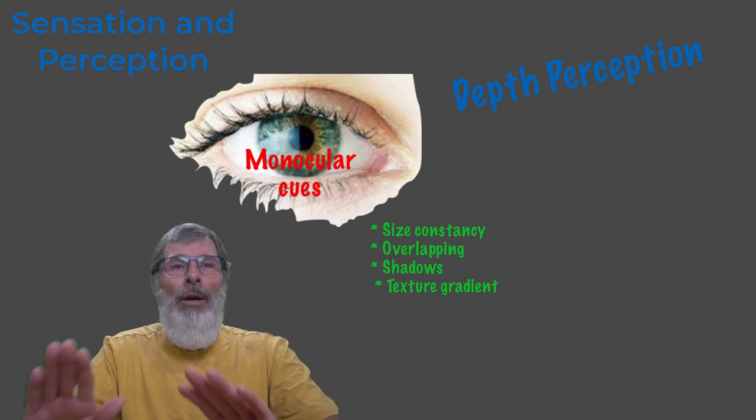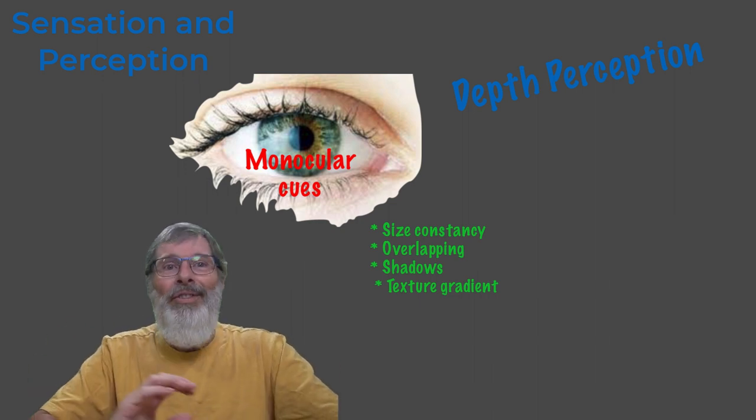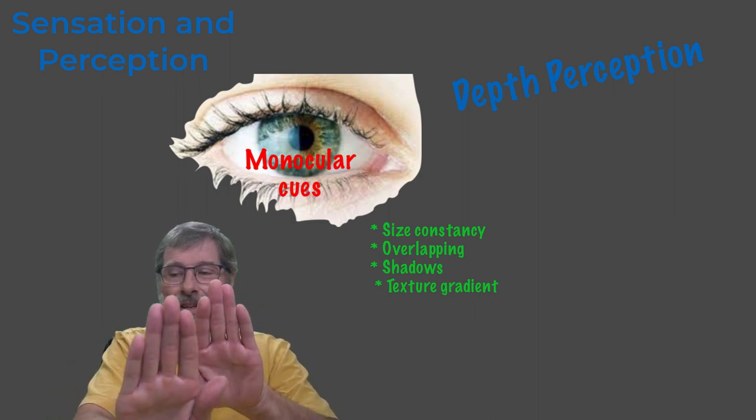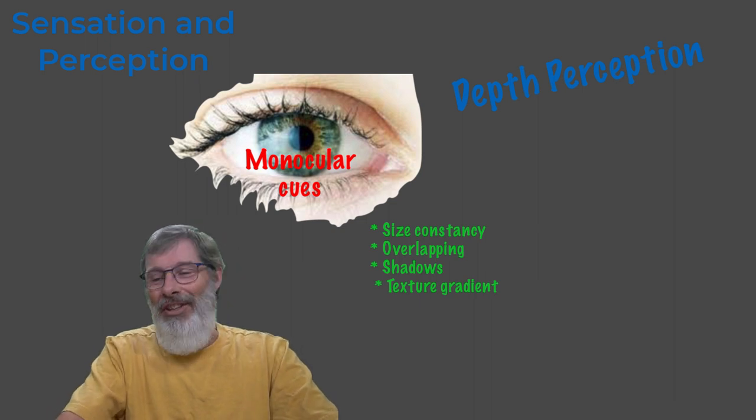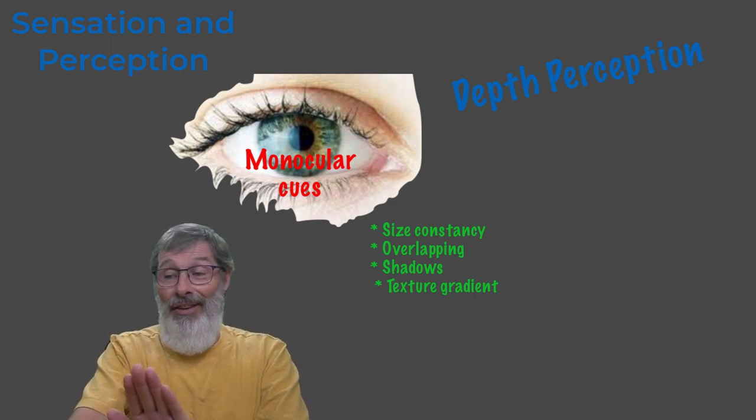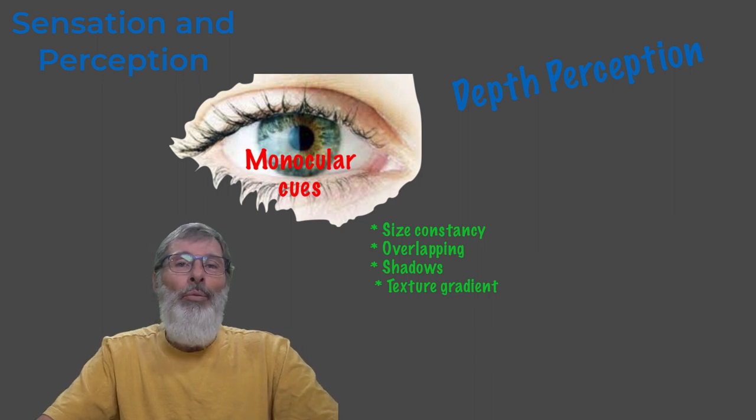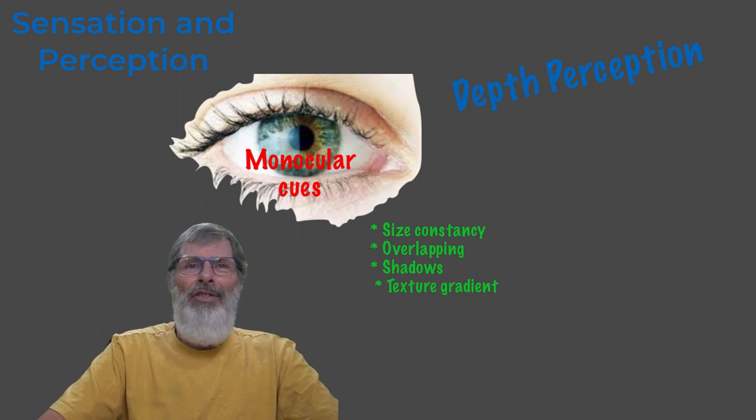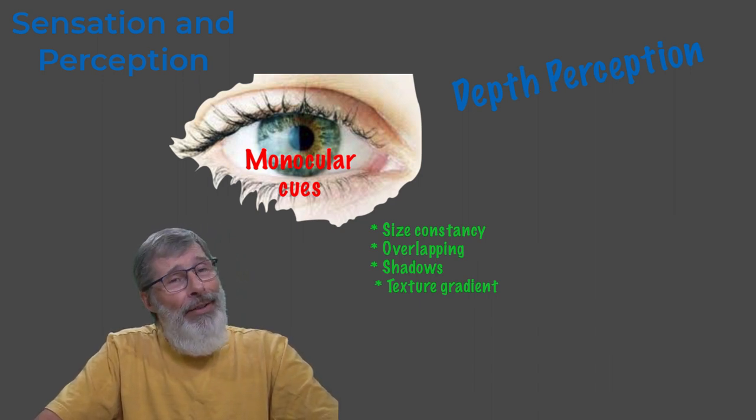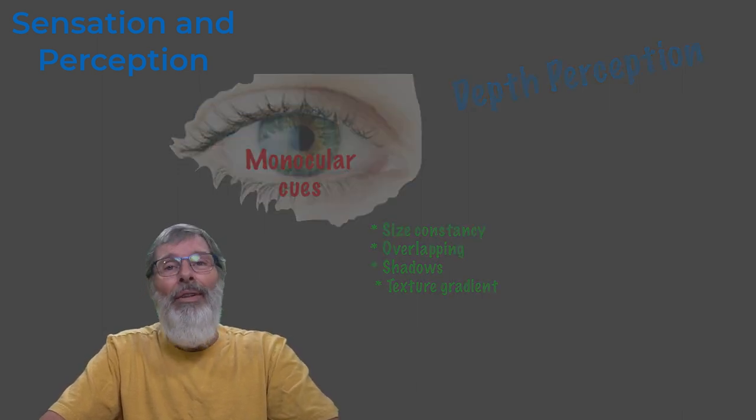Overlapping: nearby objects can block from your view more distant objects. So if you have your hands kind of like that, my hands look huge. Something like that. You know that the object behind, even though it's your hand, isn't smaller. It's just the perspective of it. Shadowing: this is where opaque objects block light and produce shadows giving us the relationship to the source of light. So we don't see it as clearly, but we can still discern and perceive what it may be.